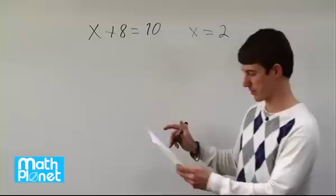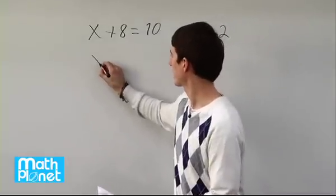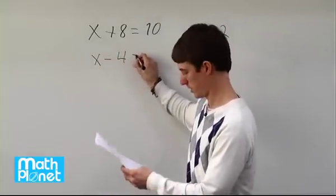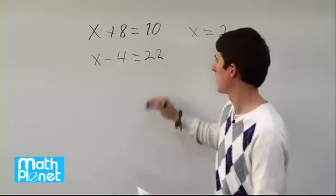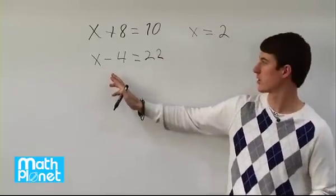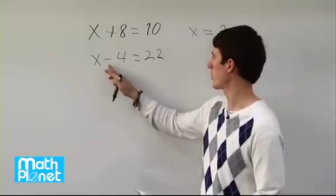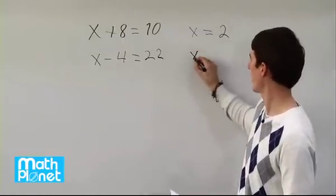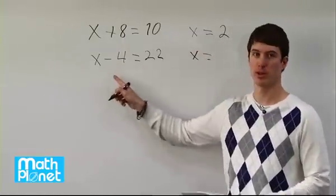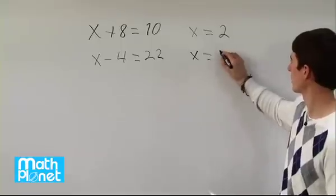Let's do a couple more just like this. Now we have x minus 4 equals 22. Now the inverse operation is plus. We have x minus 4. The inverse of subtraction is addition. So we want to add 4 to both sides. So we have x equals 22 plus 4. 22 plus 4 is 26.